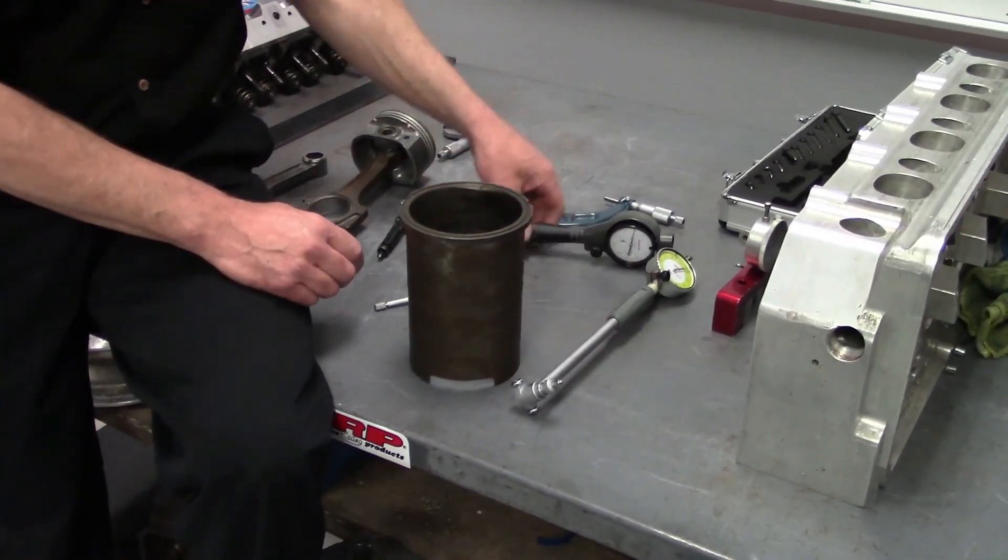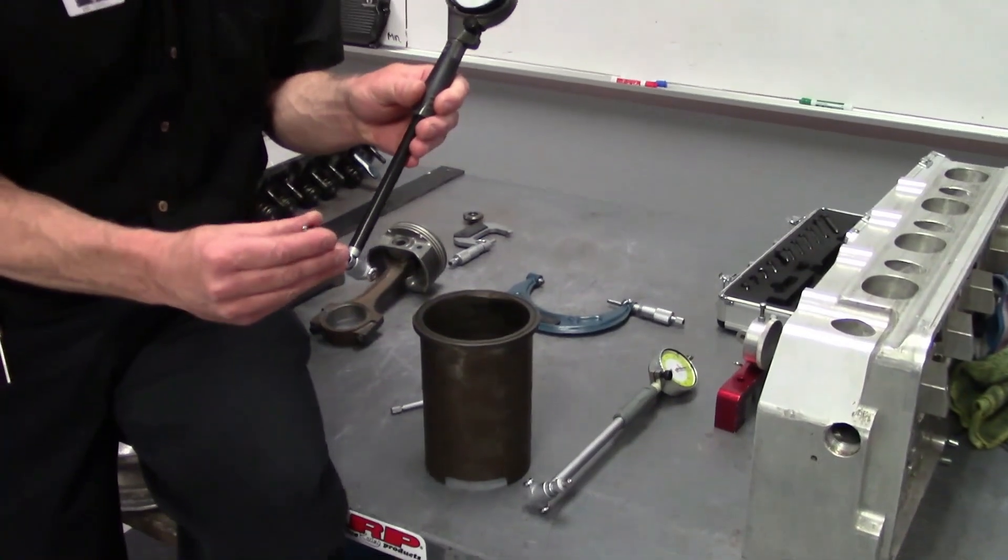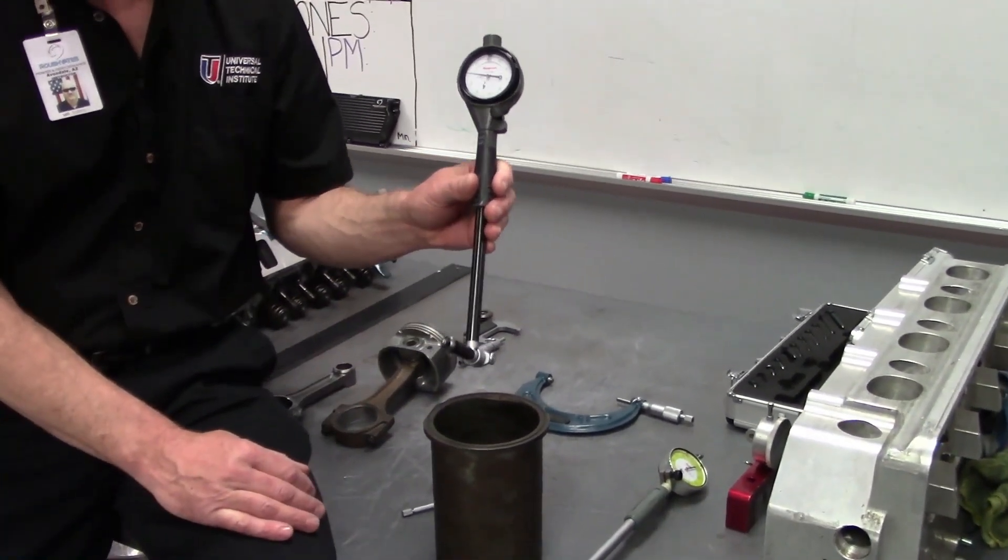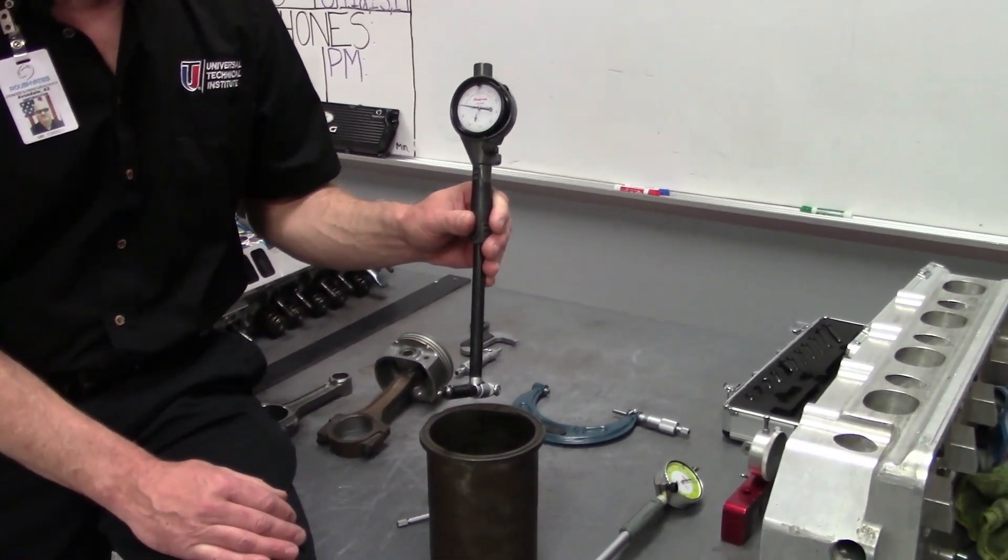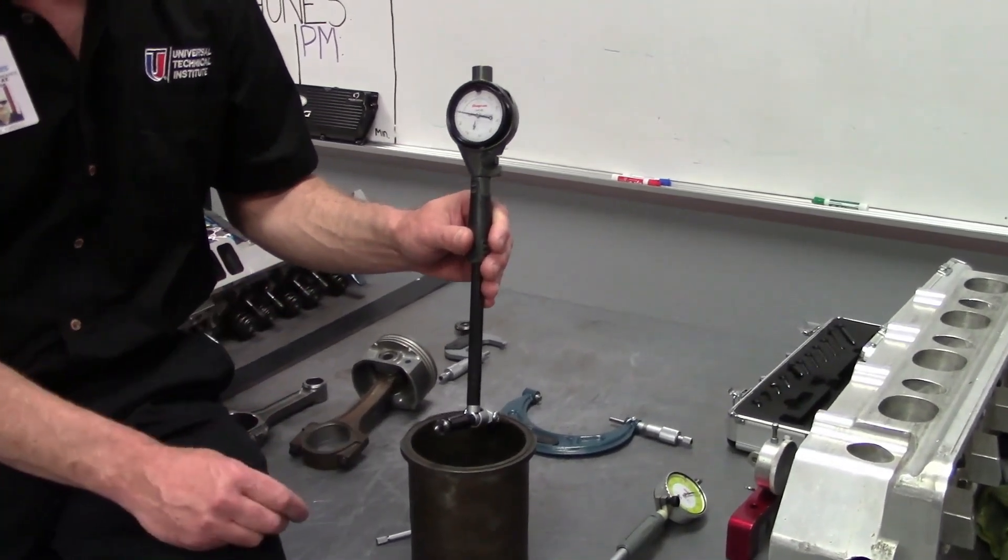The other tool that you're going to be using is a dial bore gauge. Now the dial bore gauge has to be calibrated. First of all, you can check taper with a dial bore gauge or out of round for that matter.